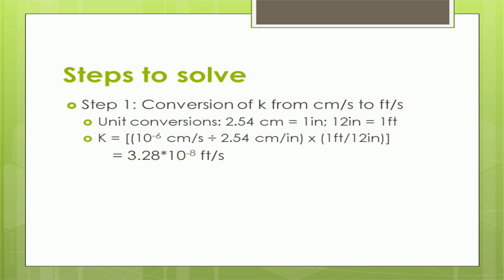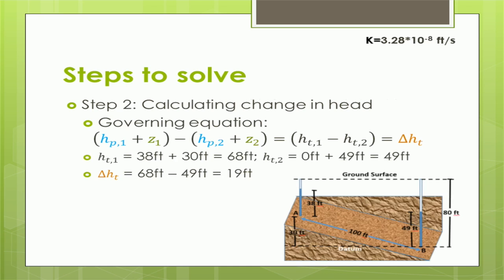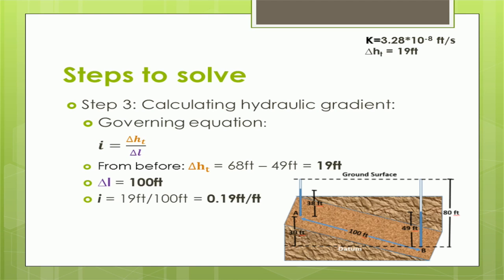The first step is to convert K from units of centimeters per second to units of feet per second. Knowing that there are 2.54 centimeters in an inch and 12 inches in a foot, we divide the original value by 2.54 to convert to inches per second, then multiply by 1/12 to convert to feet per second. The value for K in feet per second is then 3.28 × 10⁻⁸ feet per second. Next, we calculate the change in head between point A and B. The elevation head at A is 30 feet, while the pressure head is 38 feet, giving a total head at A of 68 feet. Similarly, the total head at point B is 49 feet. The difference in head between these two points is 68 feet minus 49 feet, or 19 feet. To calculate the hydraulic gradient, we divide the change in head by the perpendicular length between wells: 19 feet divided by 100 feet equals 0.19 feet per foot — a dimensionless quantity.